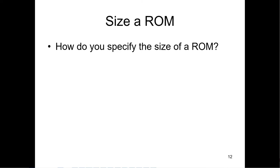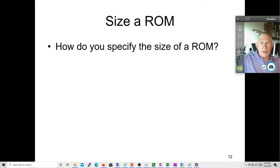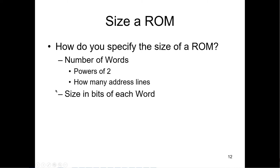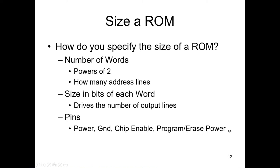How do you specify the size of a ROM? You need to know the number of words — usually rounded to a power of two — which tells you how many address lines you need (2-to-the-N). Then determine how many bits each word will be, which drives the number of output lines. The pins are basically power, ground, chip enable, program, erase, and power — those are the lines you'll typically have in addition to address and output lines.